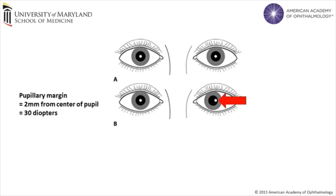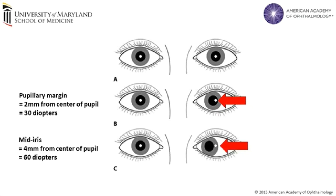There are a few landmarks useful for estimating the deviation. As an estimation, a light reflex at the pupillary margin is about 2 millimeters from the center of the pupil, or 30 diopters of deviation. And if the light reflex is at the mid-iris, it is about 4 millimeters from the center of the pupil, which is about 60 diopters of deviation.